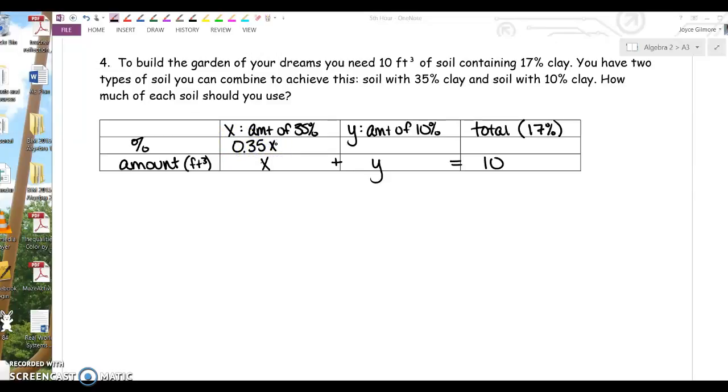That represents how much of soil X is actually clay. 0.10 times Y represents how much of soil Y is actually clay.